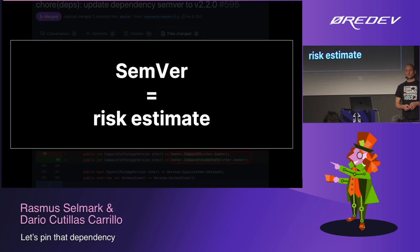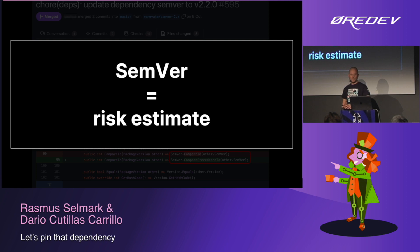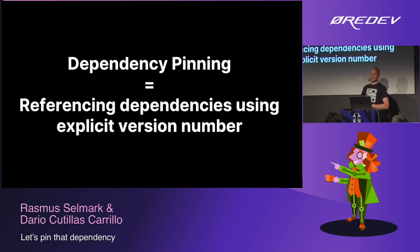This makes us conclude that we should probably see semantic versioning as more of a risk estimate these days, and probably a more pragmatic approach to versioning. Otherwise all packages would probably be on version 42 and above, if every time we make a change like that we have to bump the major version number. So when we talk about dependency pinning in this context, that means referencing dependencies using explicit version numbers — not ranges, but exact version numbers.